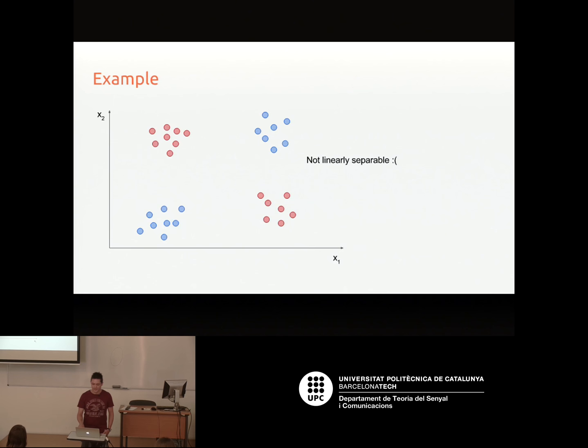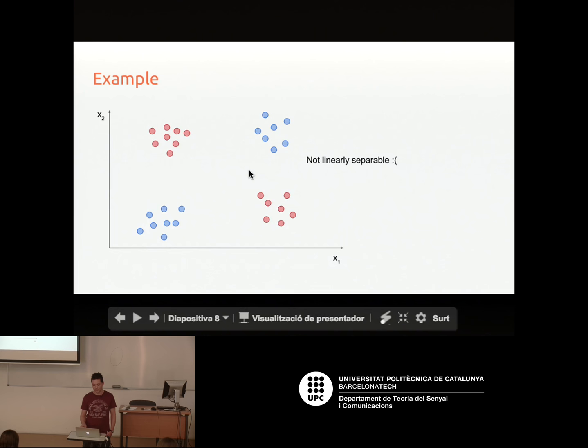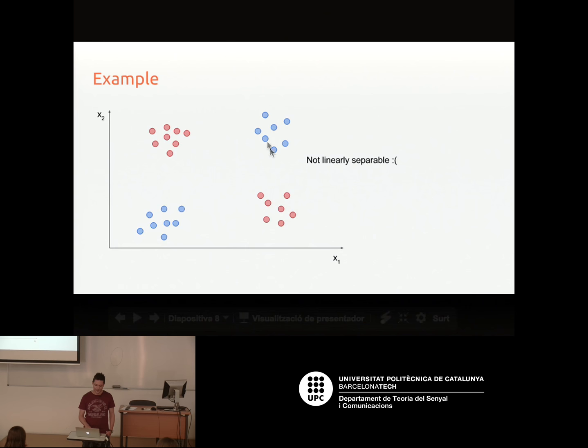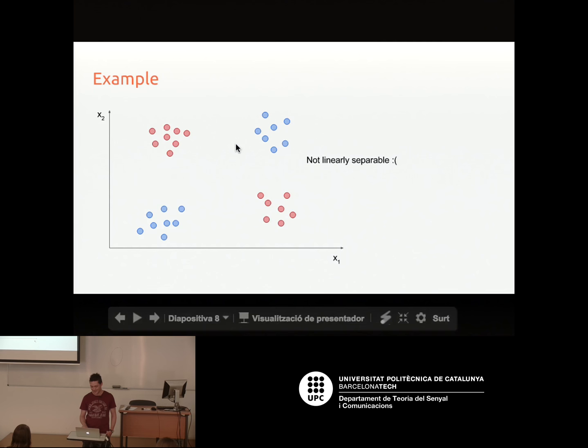Another example showing how unsupervised learning can help in practice is trying to classify red points from blue points. If we want to do this with a completely linear classifier, there's no real line you can draw that won't give you roughly 50% error.